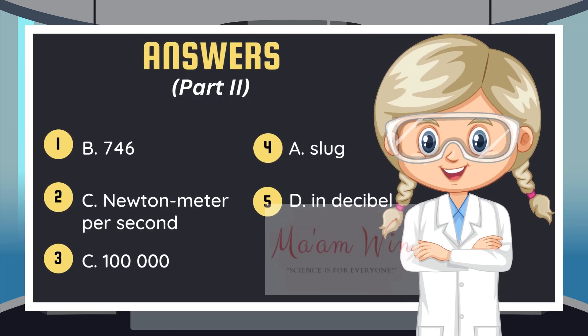Kindly check your answers. Number 1, letter B, 746. Number 2, letter C, newton meter per second. Number 3, letter C, 100,000. Number 4, letter A, slug. And number 5, letter D, in decibel.